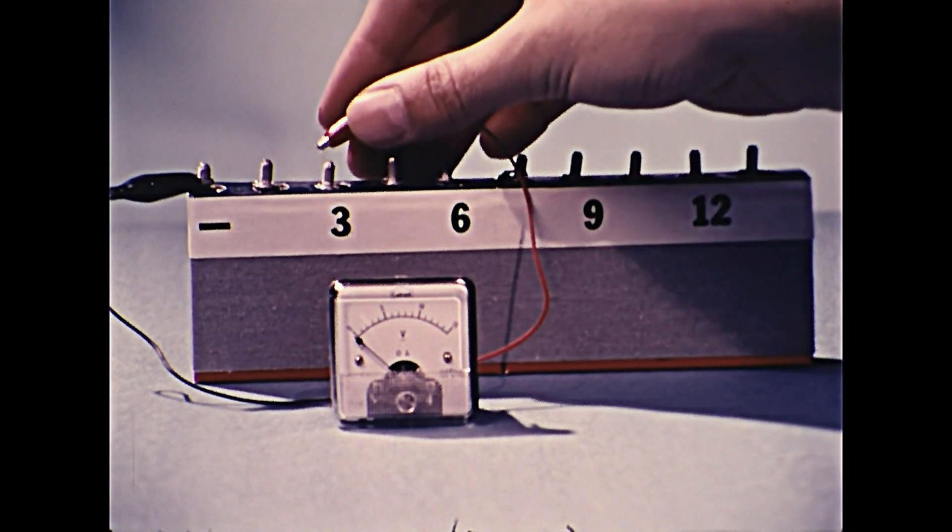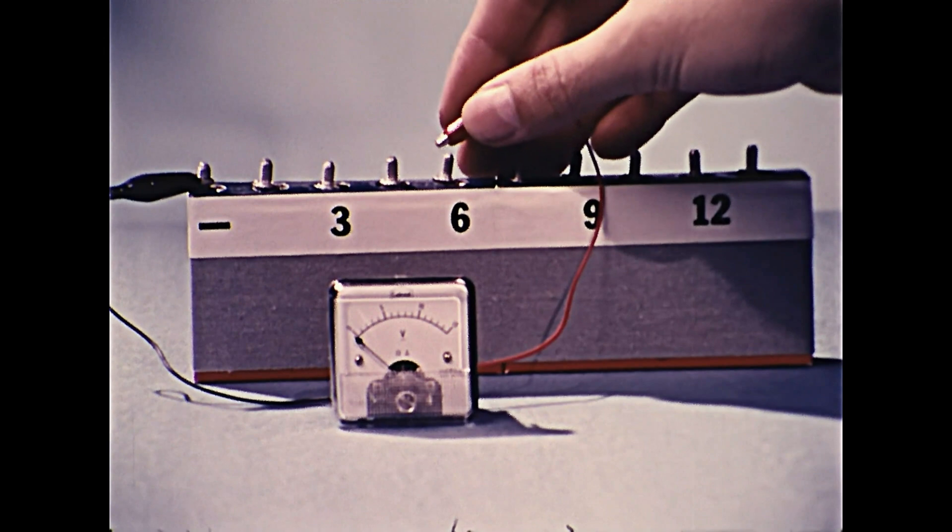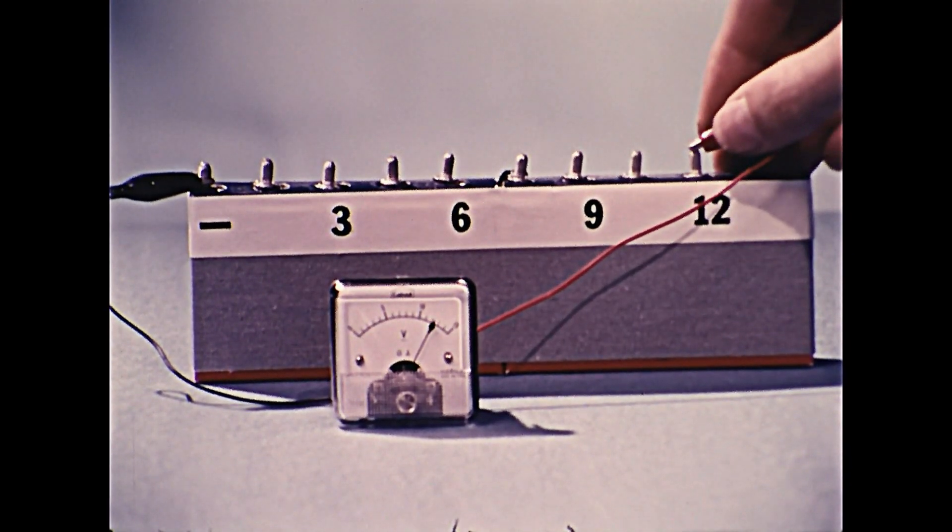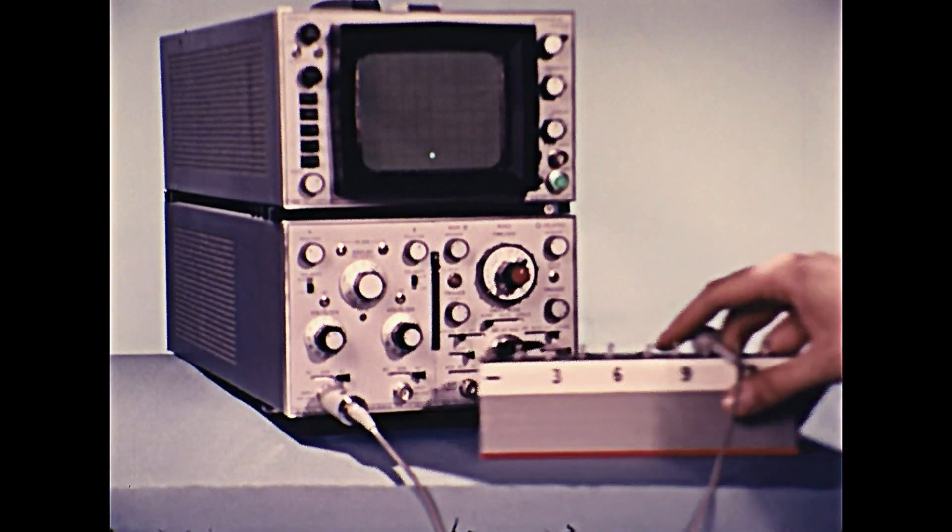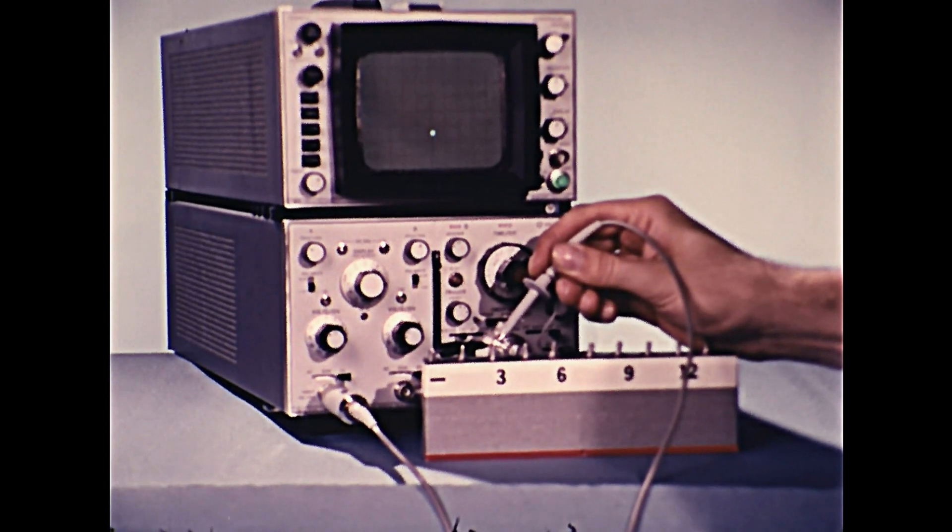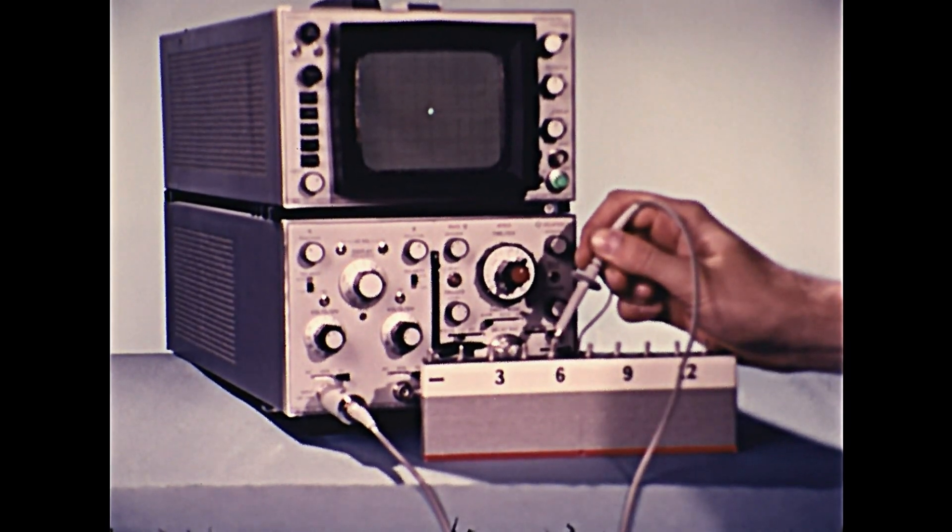The terminals on this battery are arranged so that various voltages are available. The relationship of voltage to deflection is so precise that a cathode ray oscilloscope can be used as a voltmeter.